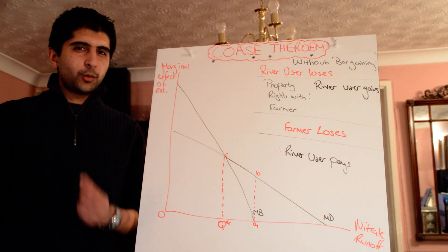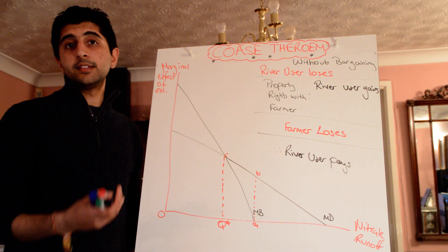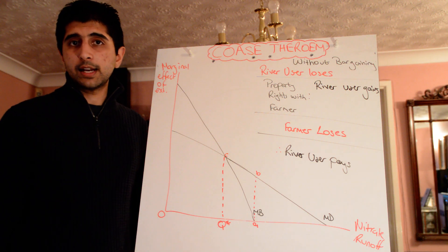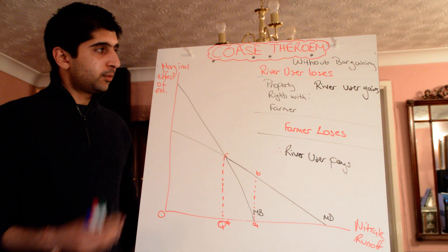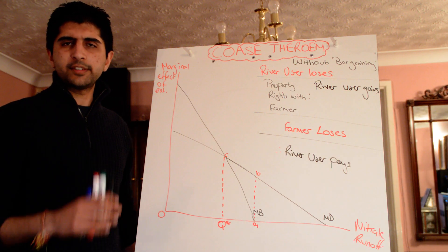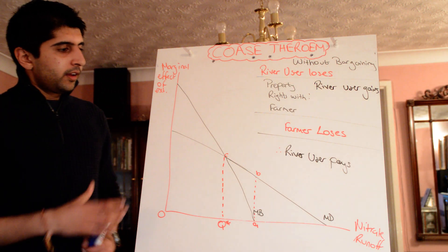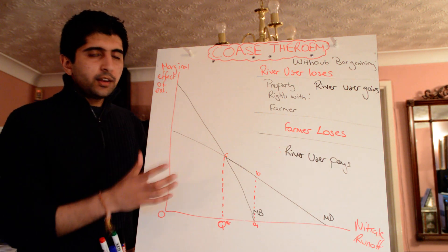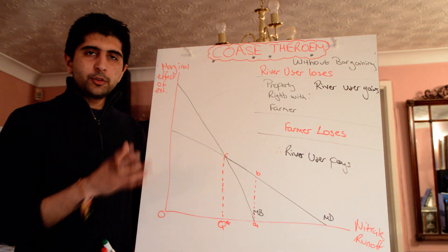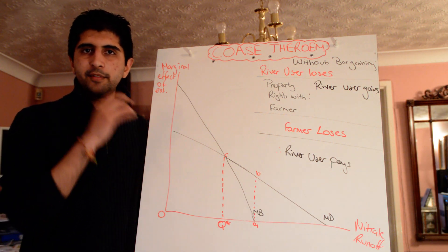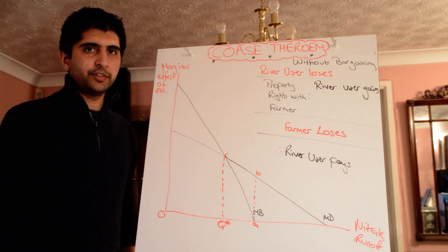Hi all. As we all know, one of the main reasons markets fail is because of the existence of negative externalities. One of those negative externalities is pollution, and pollution is quite a drastic one and a major one at the moment. When externalities exist in a market, economists would argue that that's the reason for government intervention — the market is failing and the government should intervene to solve it.